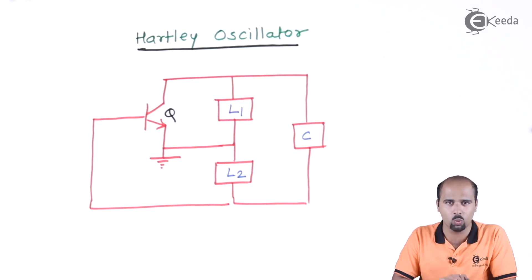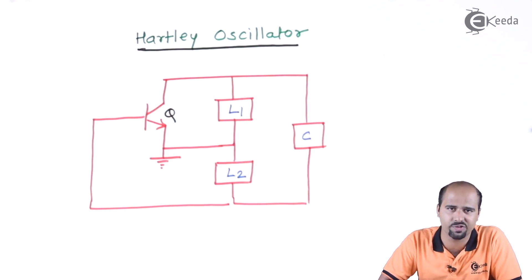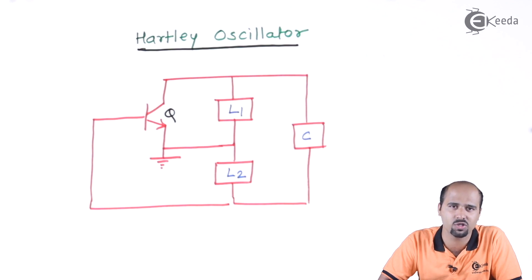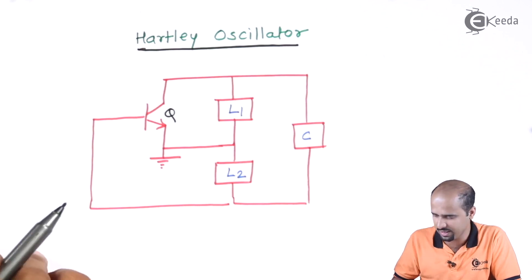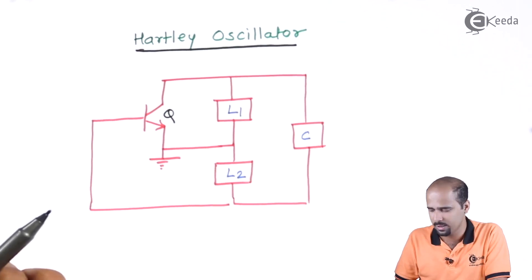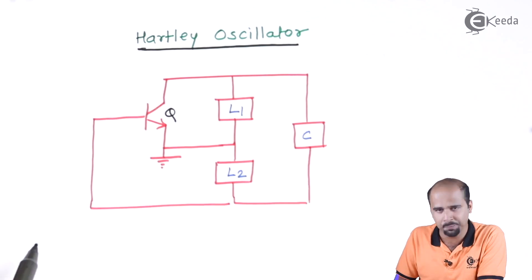Now we have to find out the frequency of oscillation for the Hartley oscillator, and along with that we have to find out the gain for sustained oscillation. We will start our analysis based on this particular circuit.